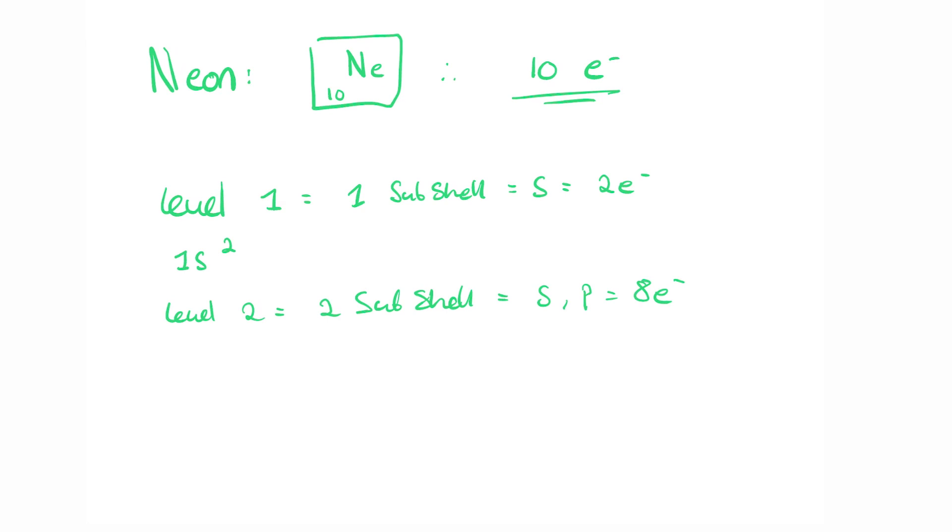But how do we write it down? First, the 2S energy level will fill 2S2. Then the 2P energy level will fill 2P6. 1S2, 2S2, 2P6 is the complete electron configuration for Neon.